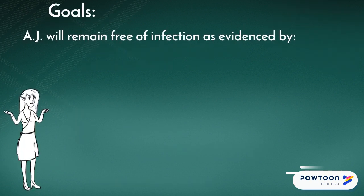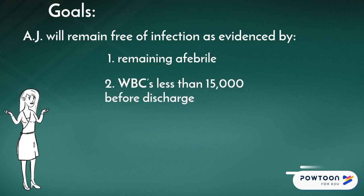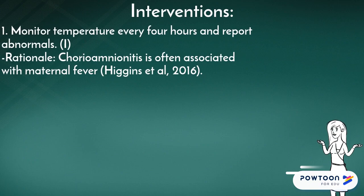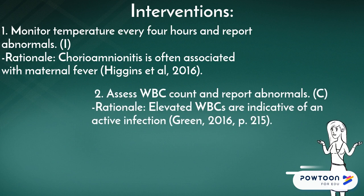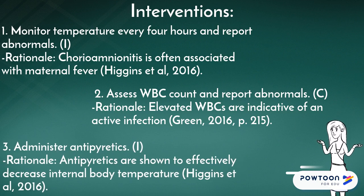Goals for AJ include remaining free of infection as evidenced by remaining free of fever, as chorioamnionitis is often associated with maternal fever. The second goal is having a white blood cell count less than 15,000 before discharge, as elevated white blood cells are indicative of active infection. Interventions include constant monitoring of vital signs like temperature every four hours, assessing lab work especially white blood cell count, reporting abnormals to the provider, and administering antipyretics to decrease internal body temperature.